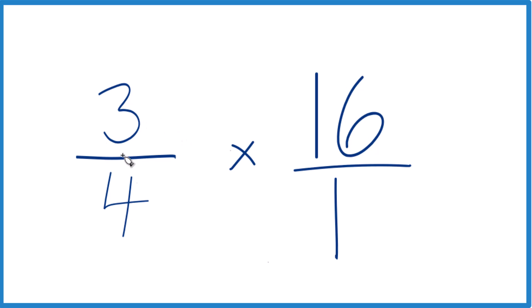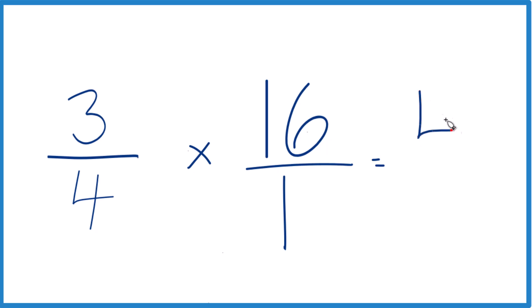And when we multiply fractions, we multiply the numerators, 3 times 16, that is 48. And then the denominators, 4 times 1, that's 4.